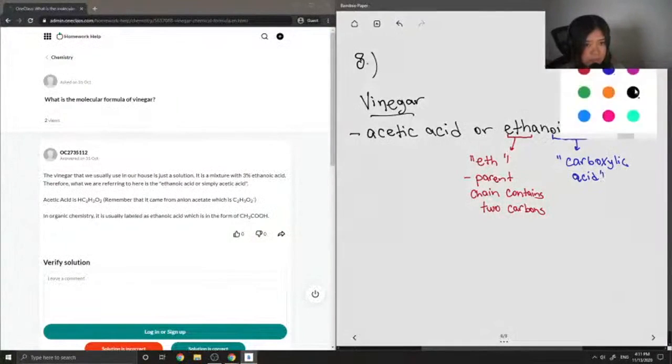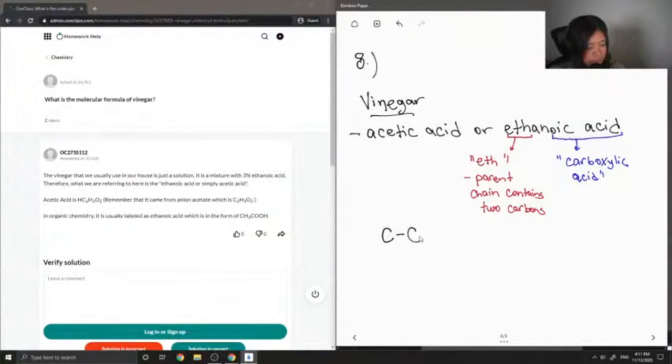So now that we know these two things about ethanoic acid, I'm going to draw out the two-carbon chain, and then I'm also going to show that it contains a carboxylic acid group.